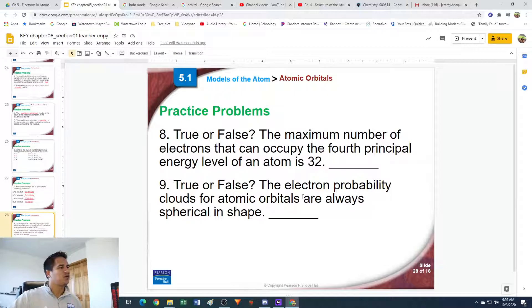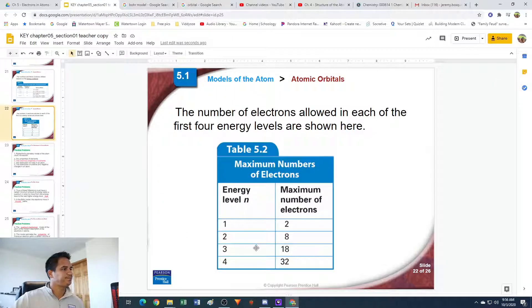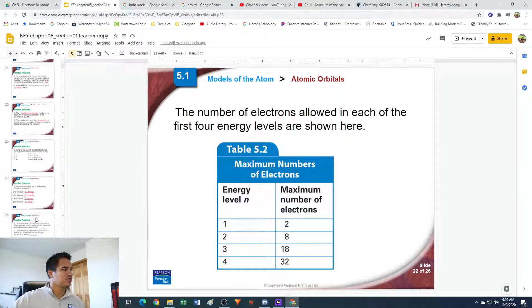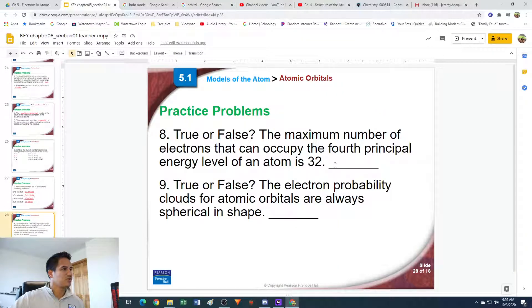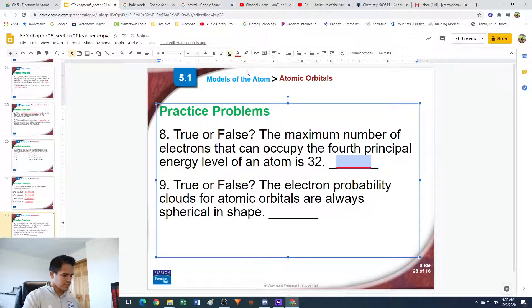Number eight. True or false: The maximum number of electrons that can occupy the fourth principal energy level of an atom is 32. We haven't talked about how to count electrons, so I'm just going to look back at the chart here. Energy level four, maximum number of electrons it says is 32. So that is true. We'll learn about how many electrons can be found inside orbitals in the next section.